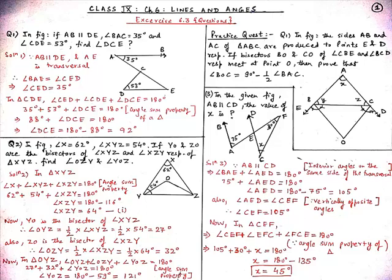Our third question for today is: In the given figure, AB is parallel to CD. The value of X is — since AB is parallel to CD, the interior angles on the same side of the transversal are supplementary. Therefore, angle BAE plus angle AED equals 180 degrees. We know angle BAE is equal to 75 degrees, so angle AED equals 180 minus 75, which is 105 degrees.